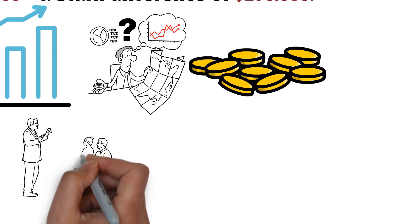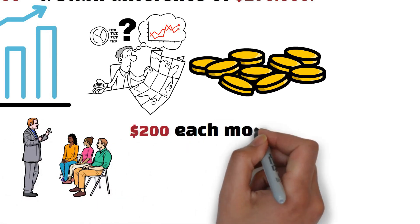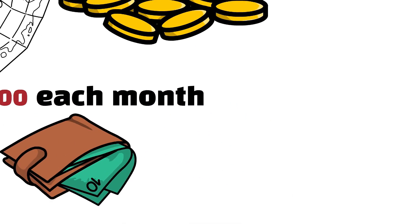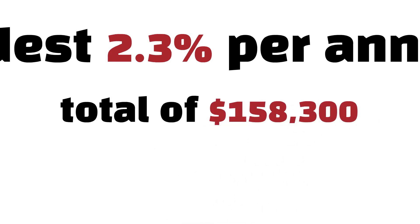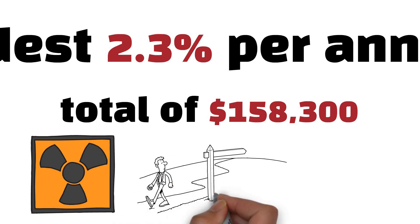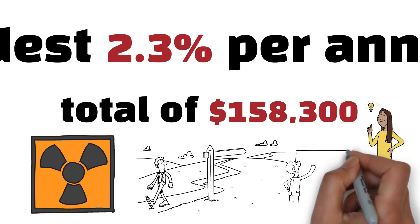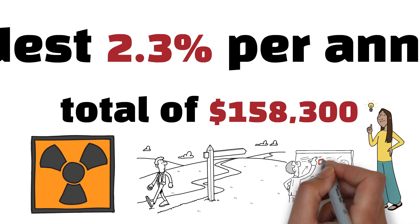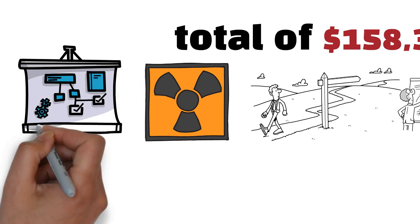Now, some may argue for the safety of conservative investments, advocating for stashing away $200 each month into a cash account, earning a modest 2.3% per annum, accruing a total of $158,300. However, it's crucial to embrace a level of risk. The journey to financial resilience often involves stepping out of the comfort zone. Understanding risk tolerance and adapting your investment strategy accordingly is not just a prudent financial move. It's a bold statement that you're committed to breaking free from the chains of financial vulnerability.